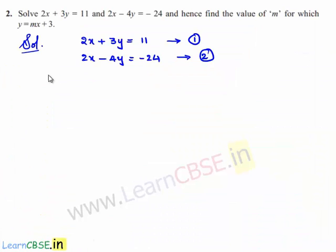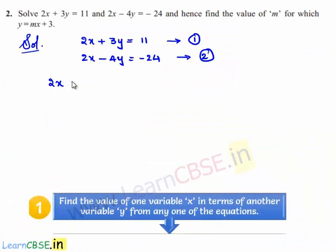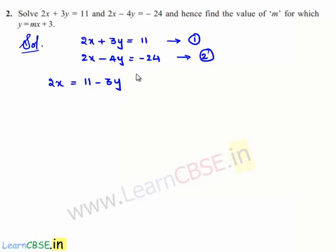The first equation can be written as 2x is equal to 11 minus 3y, by transposing 3y to the right-hand side. This implies x is equal to 11 minus 3y divided by 2.